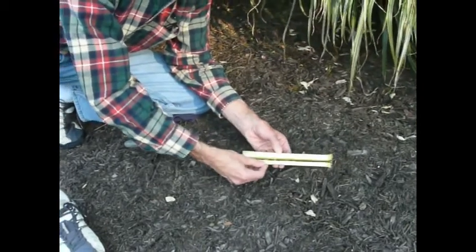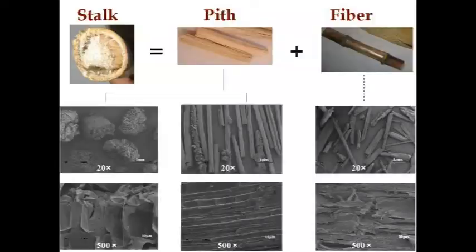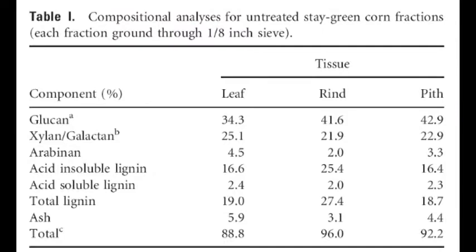We took photographs and SEM images of the various tissue fractions, and we followed changes in these structures during processing by pretreatment and enzyme hydrolysis. We also determined the chemical composition of each biomass tissue fraction during the processing.